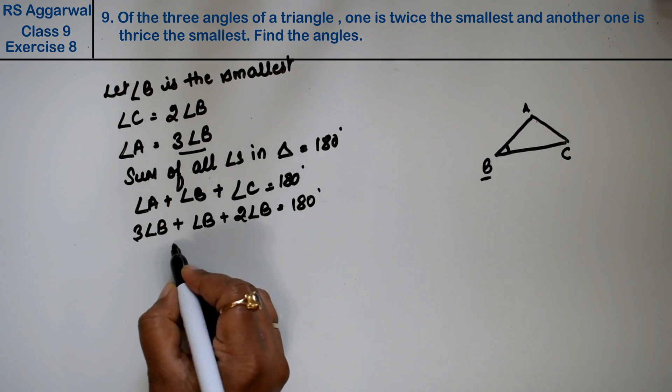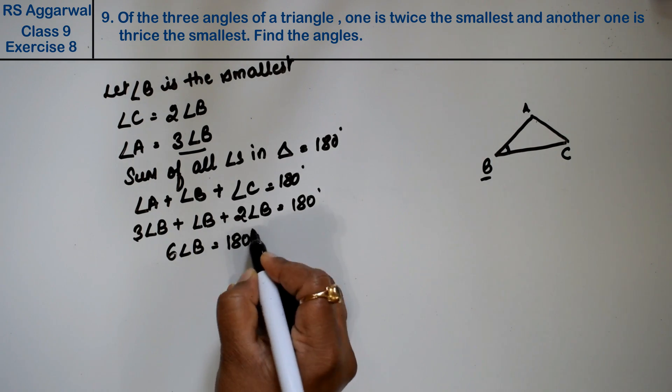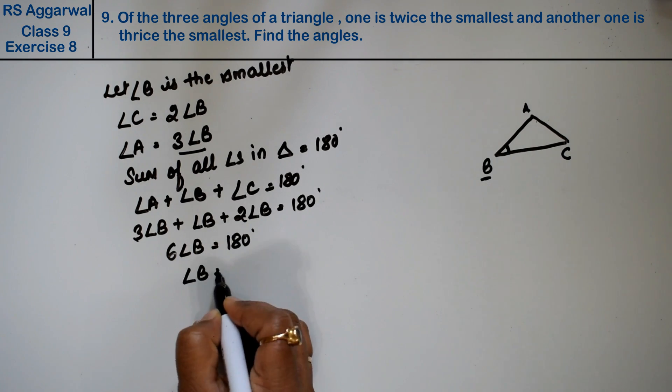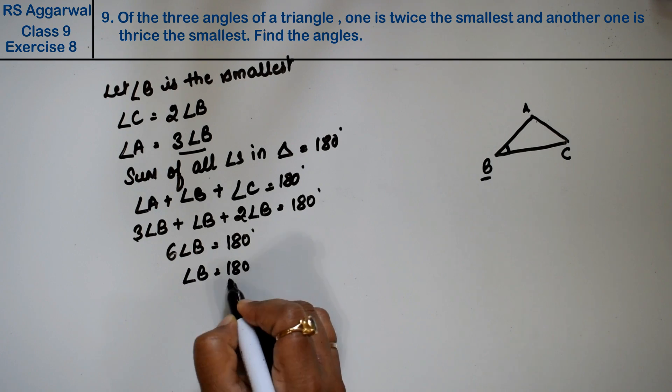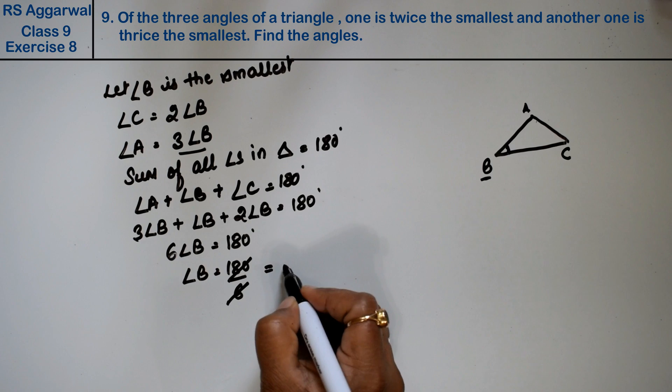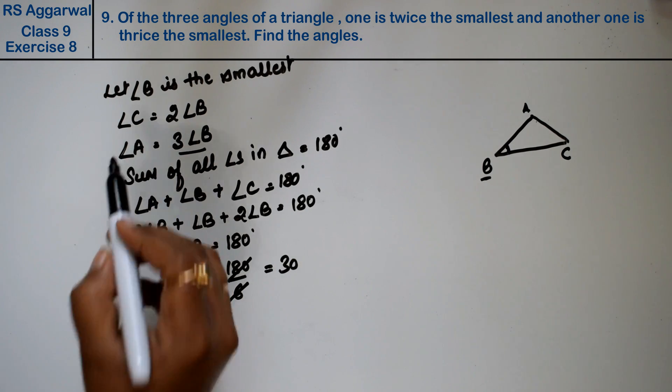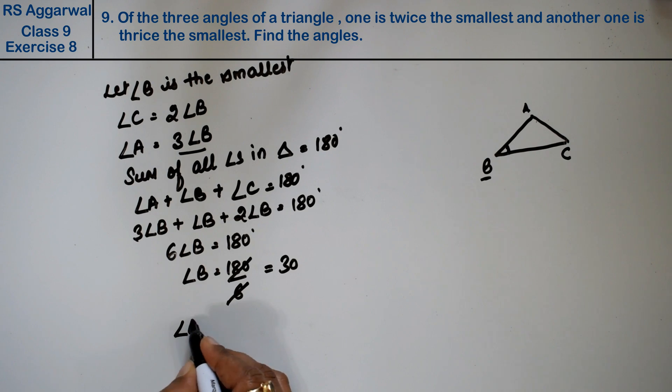3 times angle B plus angle B plus 2 times angle B equals 180 degrees. That's 6 times angle B equals 180. So angle B equals 30 degrees.